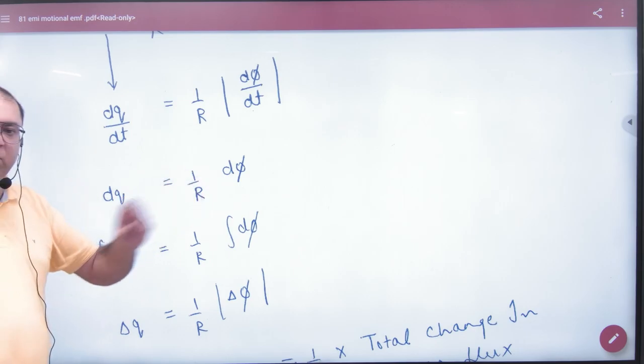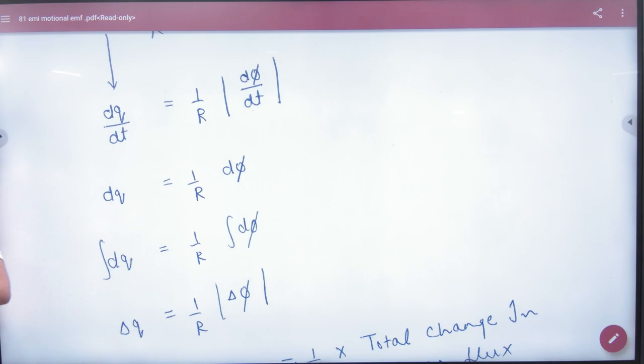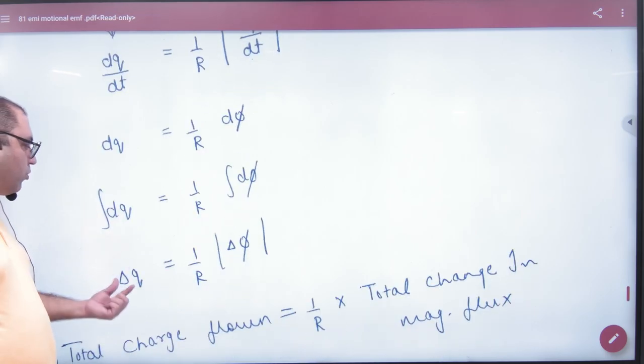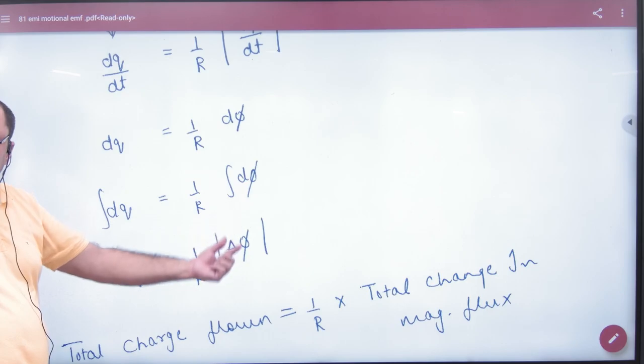Small charge when small change in flux dφ is. So if we want to take out total charge, then we have both integration. So what will dq give us dq? And what will dφ give us dφ?